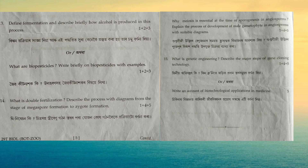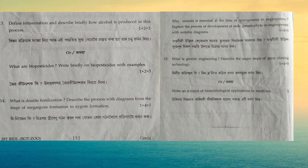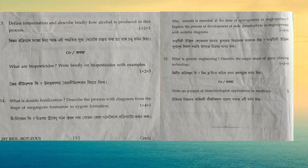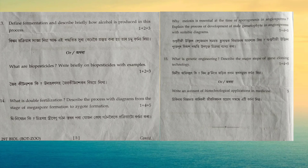The last question was: what is double fertilization? Describe the process with a diagram, from the stage of megaspore formation to zygote formation. Double fertilization occurs in angiosperms, as there are two male gametes. One male gamete fuses with the egg to form the zygote, and the other male gamete fuses with the secondary nucleus to produce the endosperm. You also have to write the megasporogenesis process that occurs in the ovary and how the functional megaspore is produced.